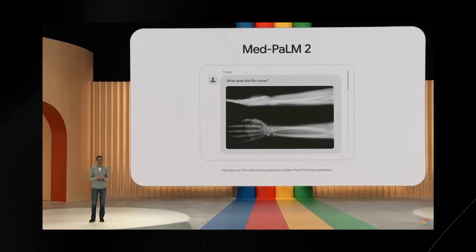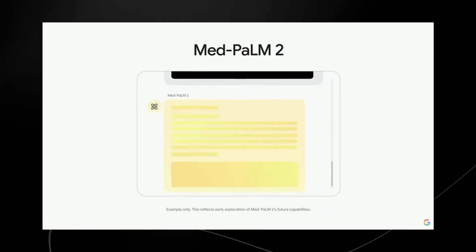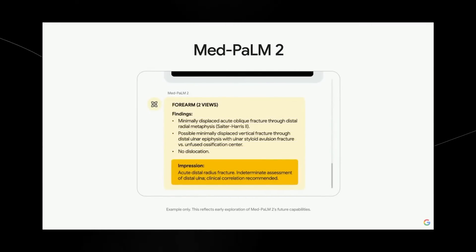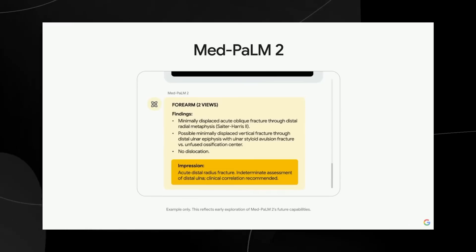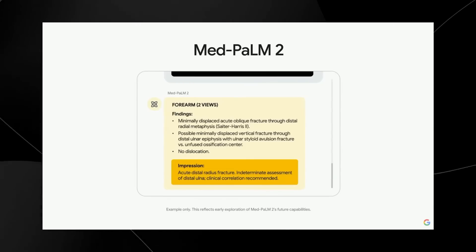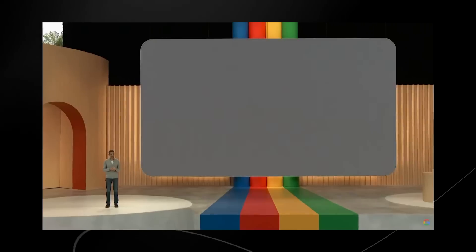You can see that this is multimodal because it asks what does this film show, and then MedPalm 2 gives the right feedback showing what kind of fracture there is. This is quite interesting because you can input a scan and the AI will tell you exactly what is wrong, which will solve a lot of issues when it comes to wrong diagnosis.